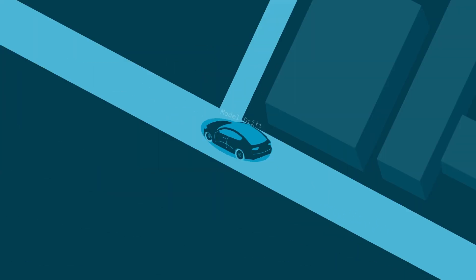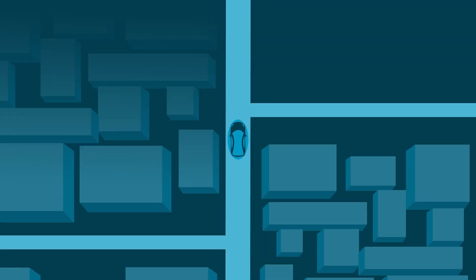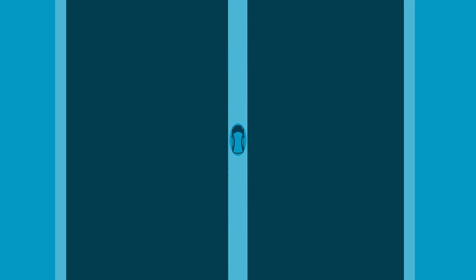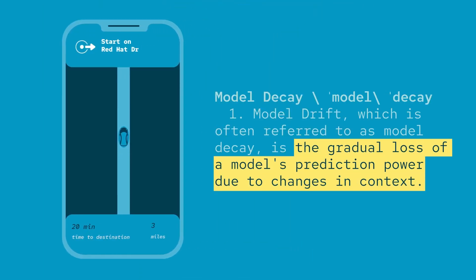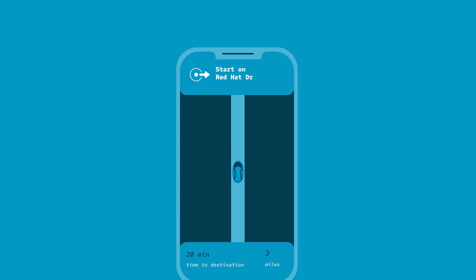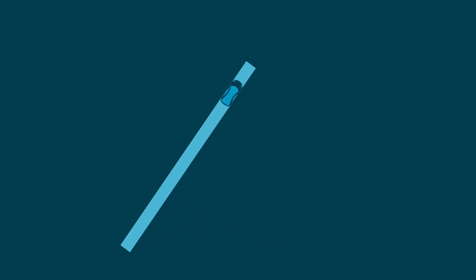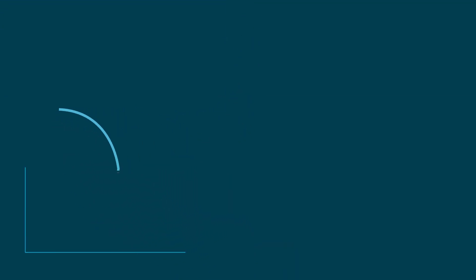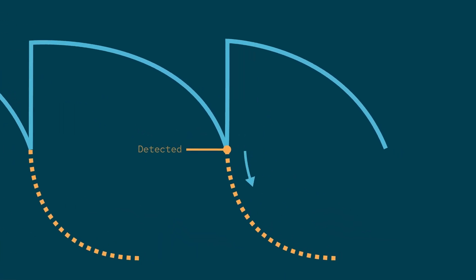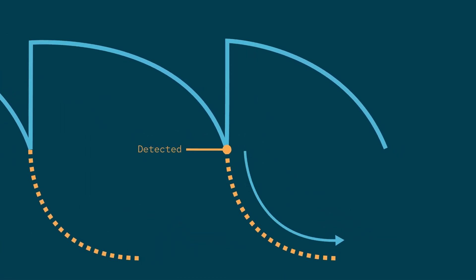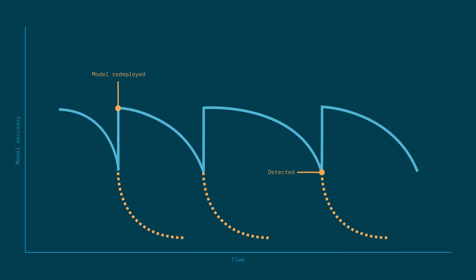Model drift, which is often referred to as model decay, is the gradual loss of a model's prediction power due to changes in context. Data can and will change over time. The accuracy of a machine learning model is at its best when the training data matches real-world data, and the model deteriorates as the world it is trained to predict changes.